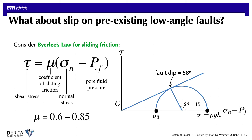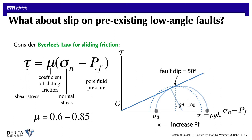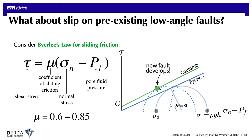You might wonder: what if we just start increasing the pore fluid pressure? This has the effect of pushing Mohr's circle to the left because it decreases the effect of normal stress. In doing this, we can arrive at a reactivation angle of pre-existing fault dips that are shallower and shallower — pushing the circle to the left lets us reactivate faults at 50 degrees, and further still at 40 degrees. But if we try to reactivate slip on faults shallower than 40 degrees, we have a problem because we again intersect the Coulomb failure curve, which means the rock body should develop a new optimally oriented fault before reactivating slip on existing poorly oriented faults that dip less than 40 degrees.